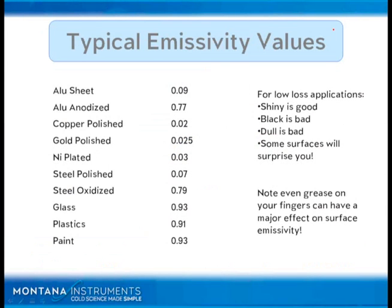Here's just really quickly we've got some emissivity values. Notice that glass here is 0.93. When I'm calculating running numbers, I just use 1 to be conservative. Samples are typically an emissivity somewhere in this range, one or just slightly below.